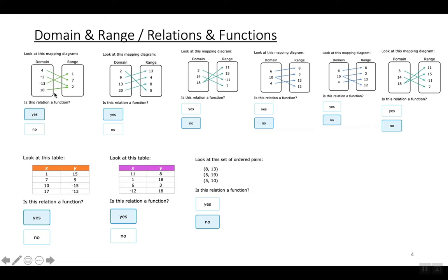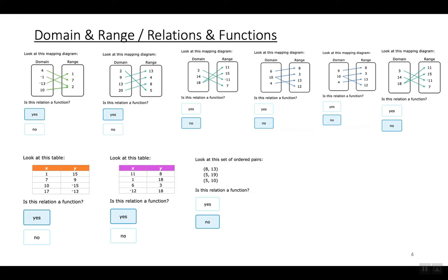Relations and functions: every example that you see on the screen is a relation. A relation is just a group of x coordinates that are matched up with their associated y coordinates. A relation is a group of x coordinates that are connected to an associated y coordinate. The question is which one of these relations are functions? Remember the definition of a function: in a function, every input can only have exactly one output. Another way to put it is every value of x can only have one value of y.